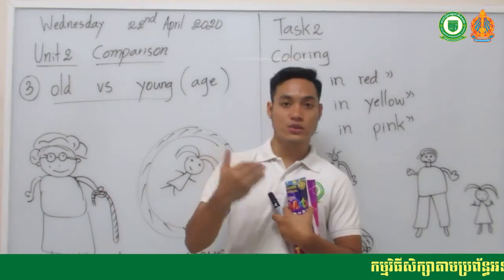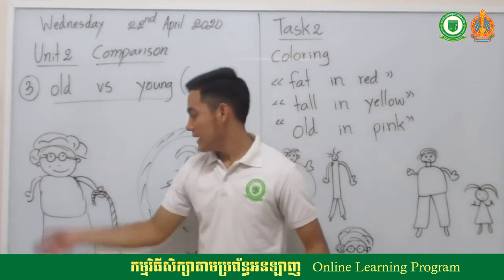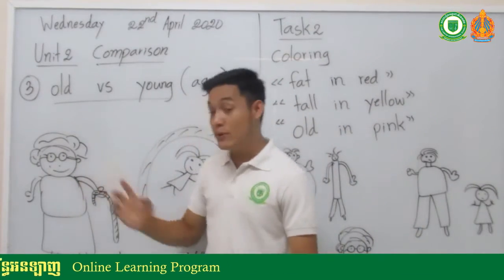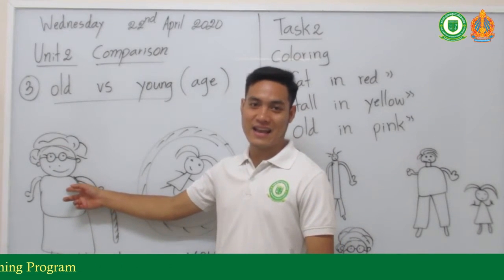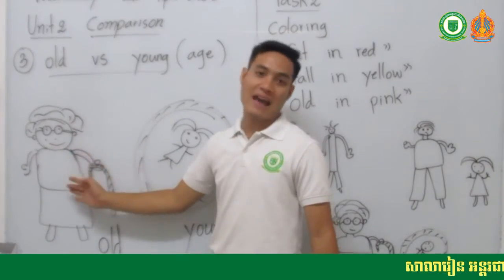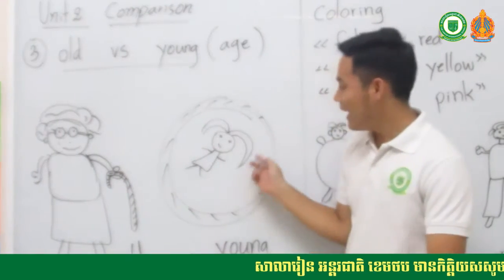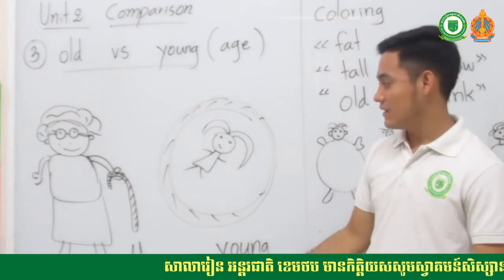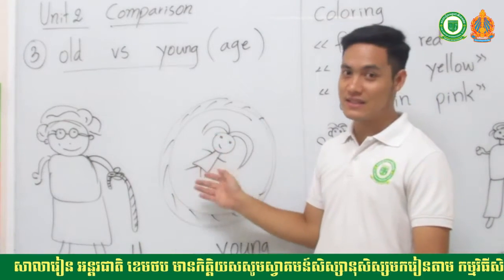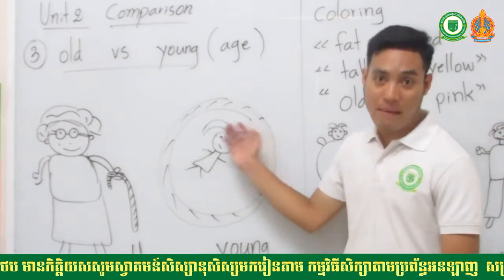We use old or young when comparing the age of objects, trees, or people. Here are two pictures — the first one is a grandmother, and who is the other one? She is a baby, a little sister — she is a baby.